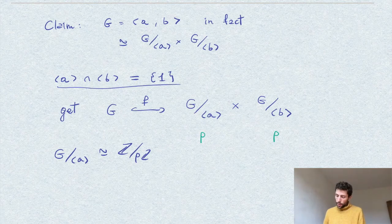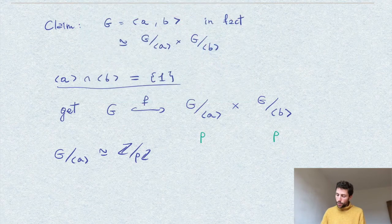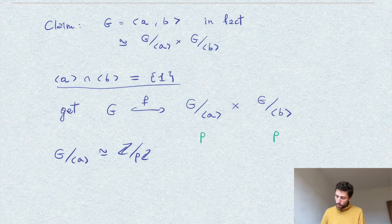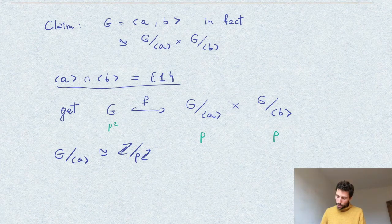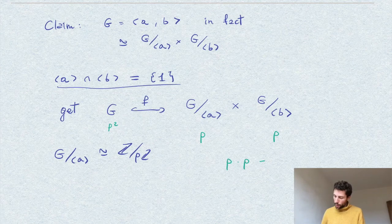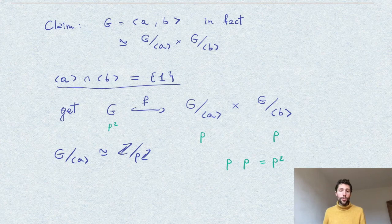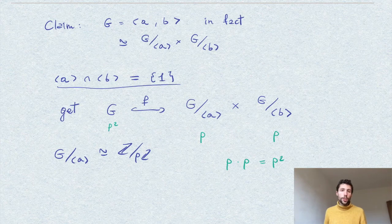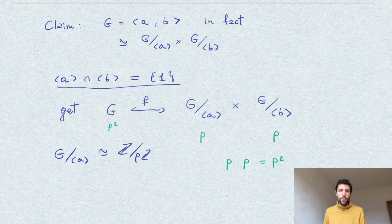So here, we have an injective morphism of groups. On one side, we have p squared elements and on the other side, we have p times p, also p squared elements. And therefore, we conclude that this morphism, this injective morphism, is also surjective, and so it is an isomorphism of groups.